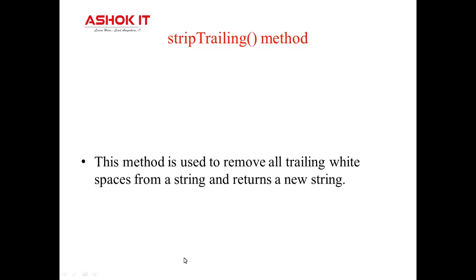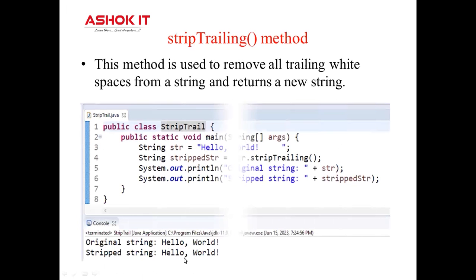The stripTrailing method removes all trailing white spaces from a string. It is part of the string class and returns a new string with all the trailing white spaces removed. If you observe the example, it will remove the trailing white spaces.